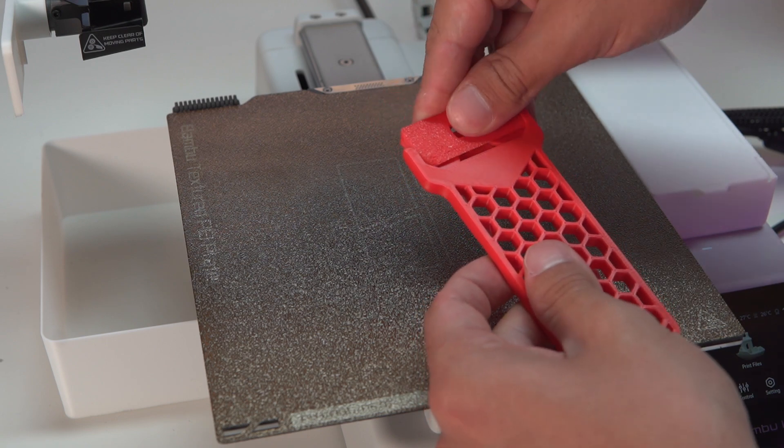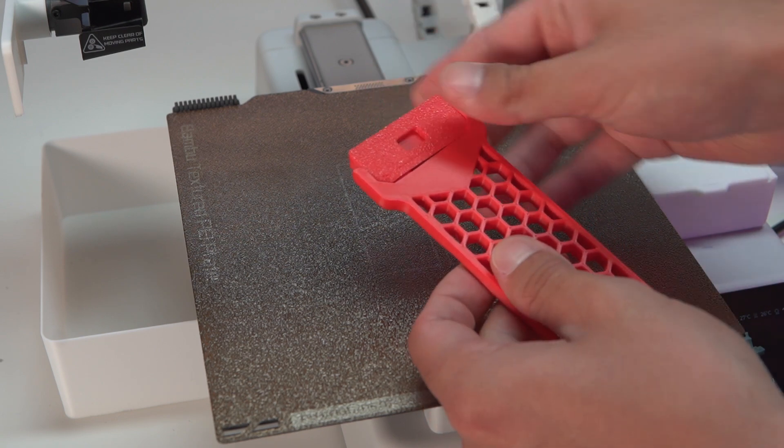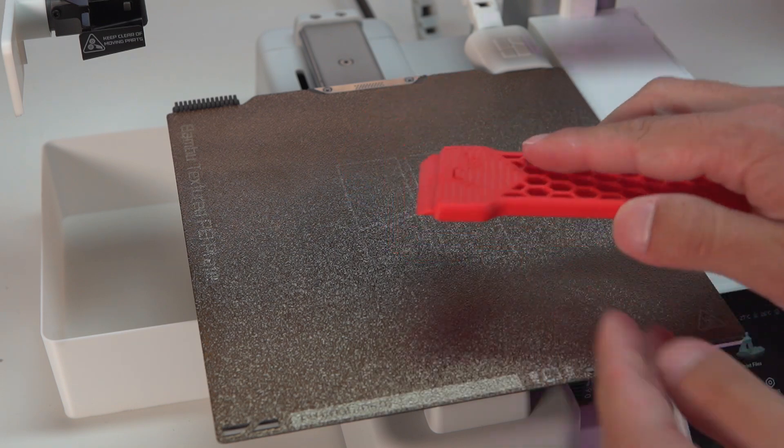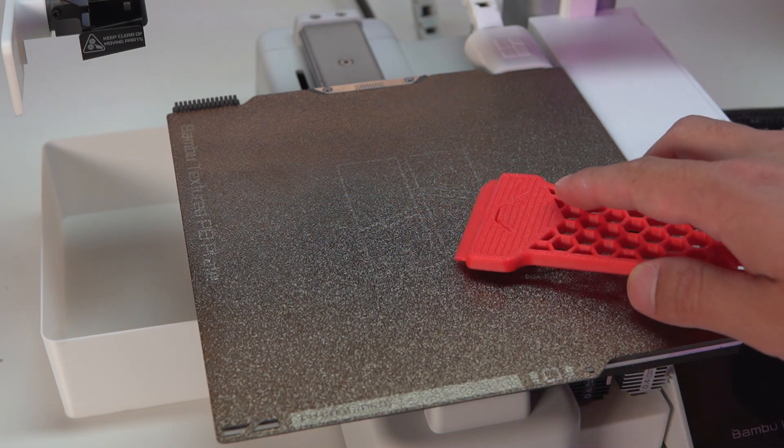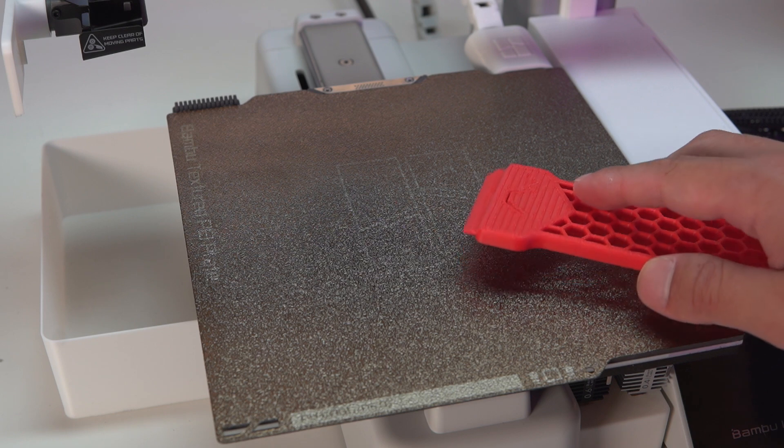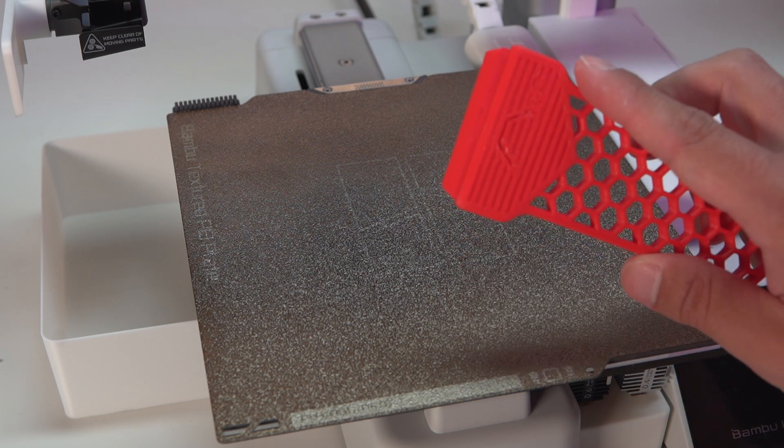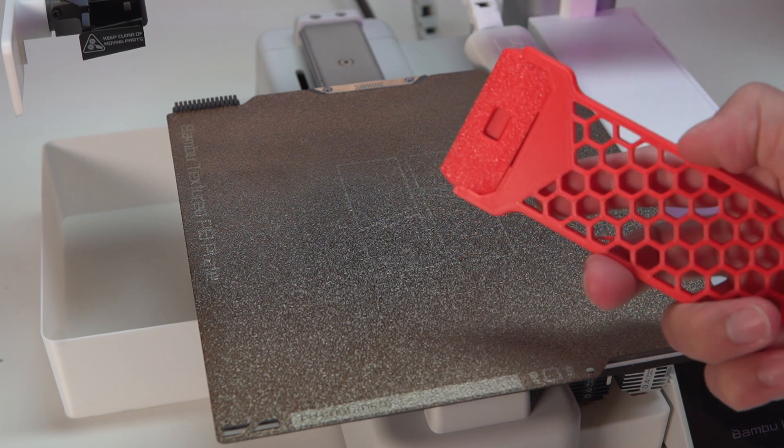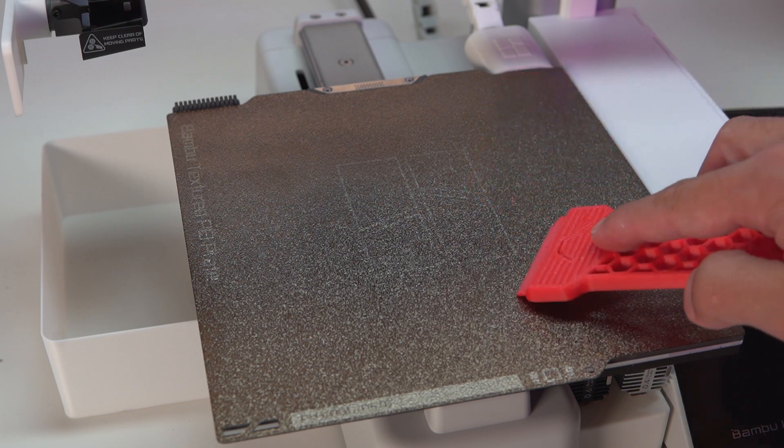If I flip it the right way, it slides right on in just like that. Now you have a perfect scraper to get items off of your build plate that may be stuck on from a brim or from high temperatures. Whatever it is, this is a super awesome print and it's plastic so it won't ruin your build plate.